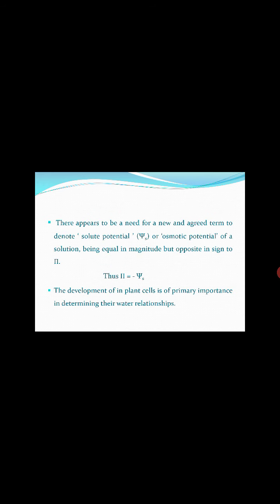There is a need for a new agreed term: solute potential, psi_s, or osmotic potential of a solution, which is equal in magnitude but opposite in sign to pi. Therefore, pi equals minus psi_s. The development of osmotic potential in plant cells is of primary importance in determining their water relationships.